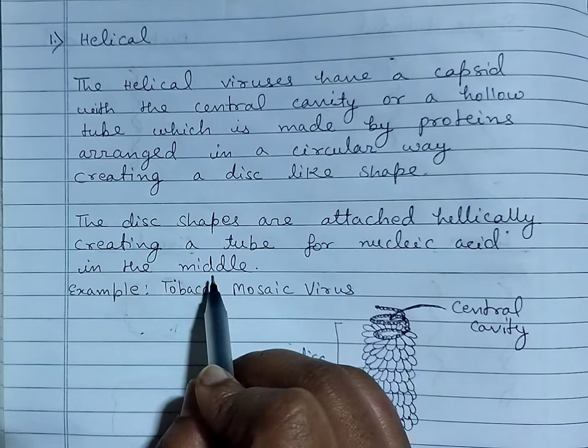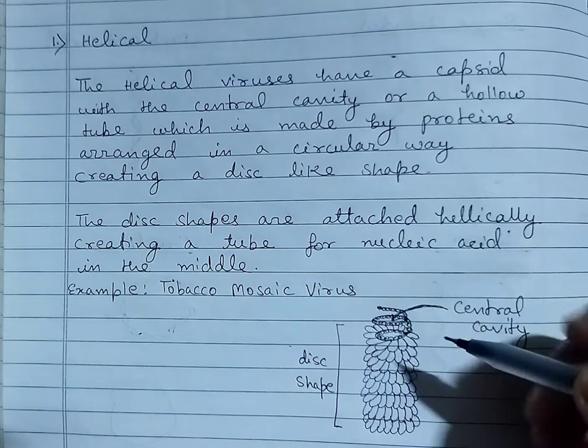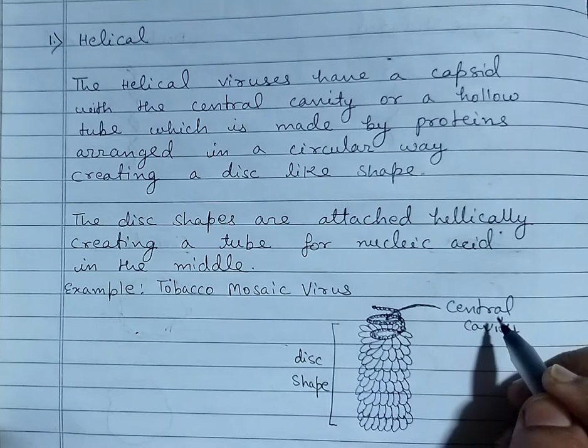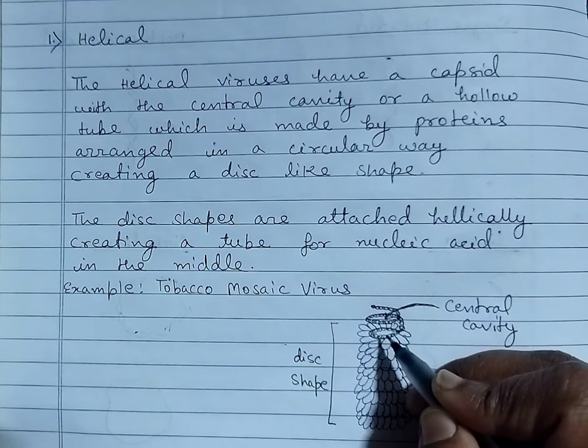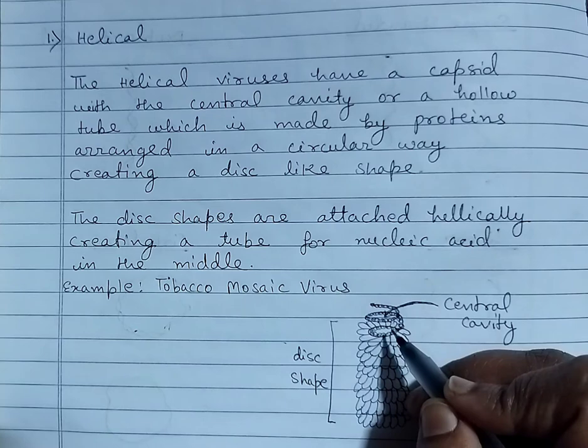The helical viruses have a capsid, which is the protein coat, made of proteins, and inside it is a central cavity. The proteins have been arranged in a circular way and create a disc-like shape.